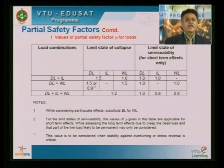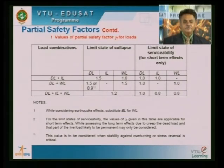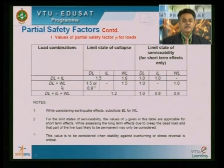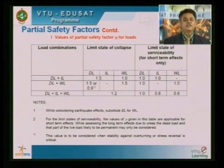For most structures — except tall buildings — we consider dead load and live load. The partial safety factor for the limit state of collapse is 1.5. For the limit state of serviceability, all values are 1.0. WL in the table indicates wind load, and you can also substitute earthquake load EL. Keep IS 456 with you during class — open chapter 3 to find this table.